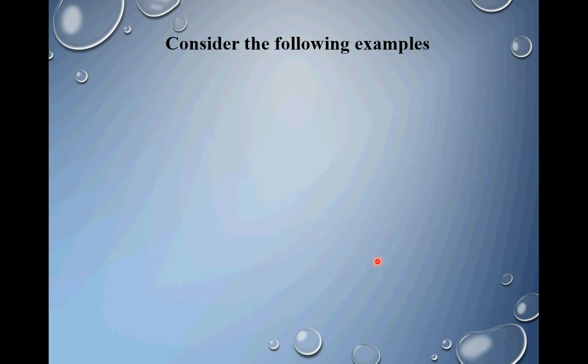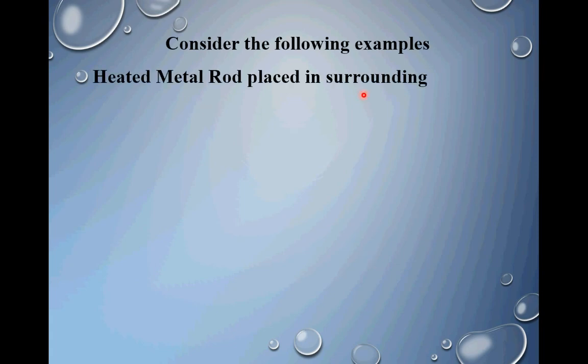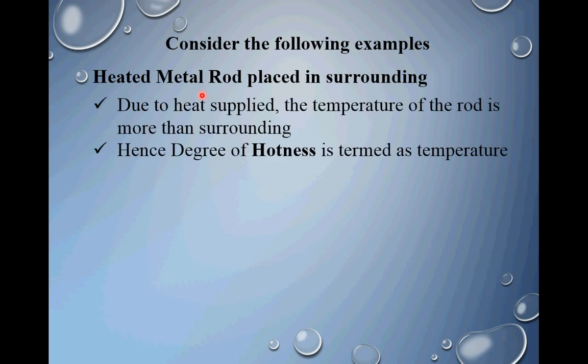Consider the following example. The first example: a heated metal rod placed in surrounding. When you are heating a metal rod, the amount of heat supplied is responsible for the amount of temperature available with that metal rod. The more heat you supply, the more is the amount of temperature. So due to heat supplied, the temperature of the rod is more than surrounding. Hence, degree of hotness is termed as temperature.